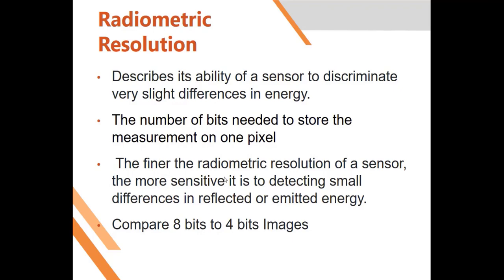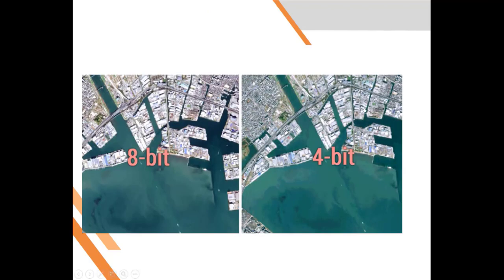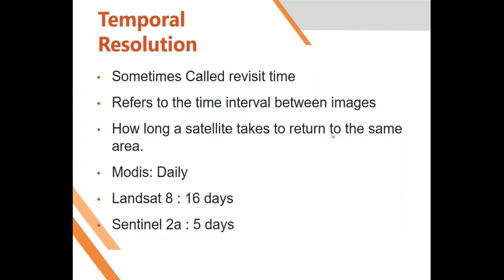Radiometric resolution refers to the number of bits used to store a given pixel. For example, we can have 8 bits or 4 bits. To demonstrate: this is a 4-bit image and this is an 8-bit image. You can see how the contrast changes along this line — it goes from dark and the color changes — because more energy levels are used to represent the 8-bit image.